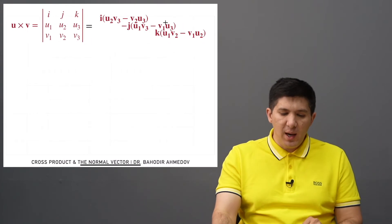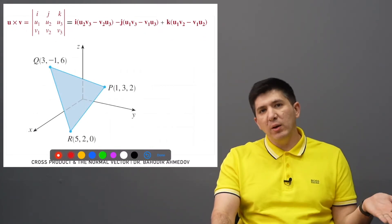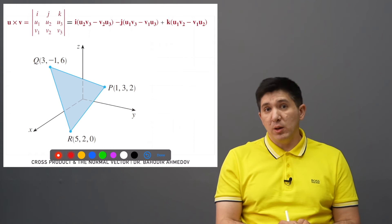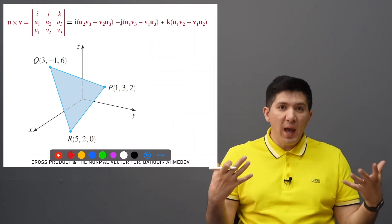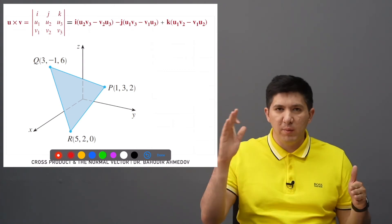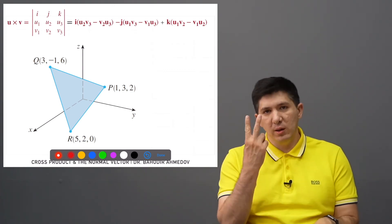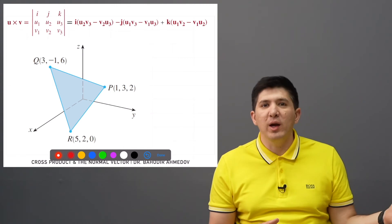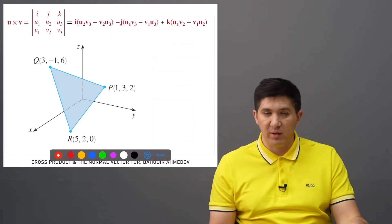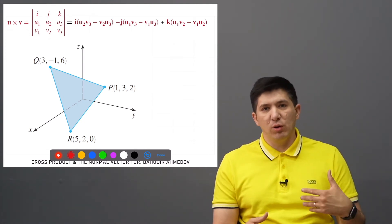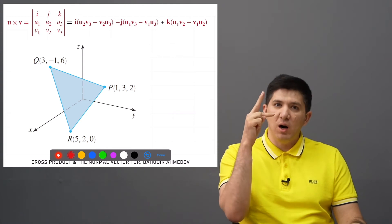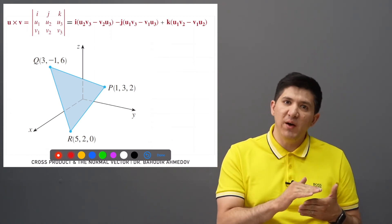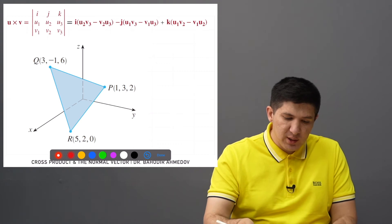Let's do an example. We are given three points and there is a plane which passes through them; we'd like to find the equation of this plane. To create the plane, I need two things: the normal vector and a point on the plane. I have more than one point, but I don't know the normal vector. To find it, I need two vectors on the plane, which I'll construct by connecting the given points.